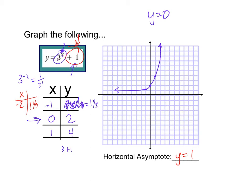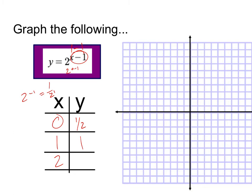Next example: 2 to the (x minus 1). The minus 1 is in the exponent, so what makes the exponent equal 0 is x = 1 — that's my middle term. So I'll use x values of 0, 1, and 2. At x = 0: 2 to the 0 minus 1 is 2 to the negative 1, which is 1 half or 0.5. At x = 1: 2 to the 0 is 1. At x = 2: 2 to the 1 is 2. At x = 3: 2 squared is 4. At x = 4: 2 to the 3rd is 8.